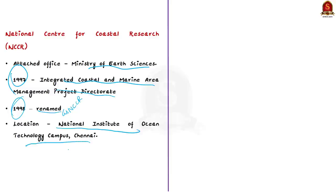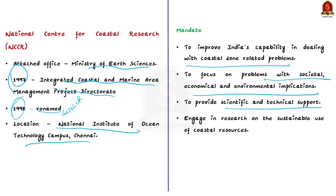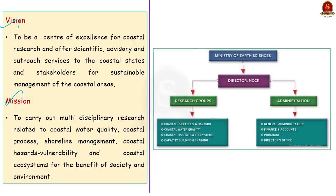The NCCR mainly focuses on improving India's capability in dealing with coastal zone-related problems, particularly those with societal, economical, and environmental implications. The organization also provides scientific and technical support to coastal communities and other stakeholders of the coastal environment. Its scientific research mainly focuses on integrated and sustainable use of coastal resources to ensure maximum benefit to society. The organization has a research section and an administration section, both headed by the director of the National Center for Coastal Research.